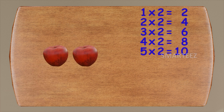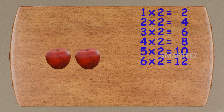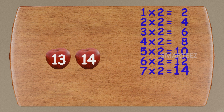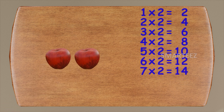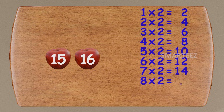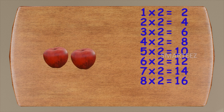Let's add two more — this will be eleven and twelve. Six times two is twelve. Let's add two more — that will be thirteen and fourteen. Seven times two is fourteen. Let's add two more — this will be fifteen and sixteen. Eight times two is sixteen.